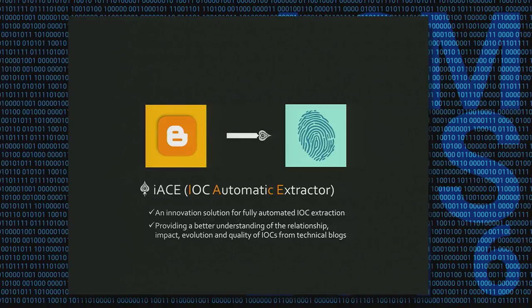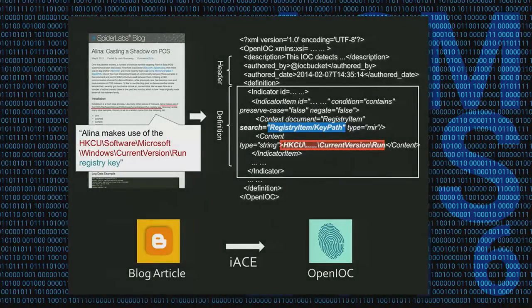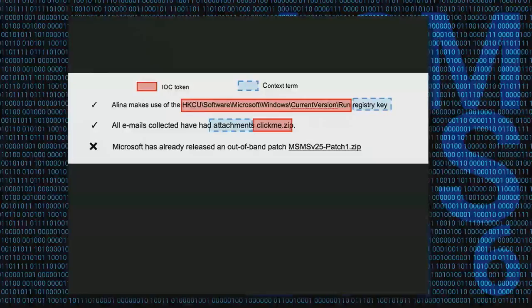Since current tools don't work, we came up with a new method called IACE — an innovative solution for fully automatic IOC extraction. It helps provide a better understanding of the relationship, impact, evolution, and quality of IOCs on technical blogs. You input a blog post and it generates a file in the OpenIOC format, which documents not only the IOC itself but also the context, showing what type of IOC it is.